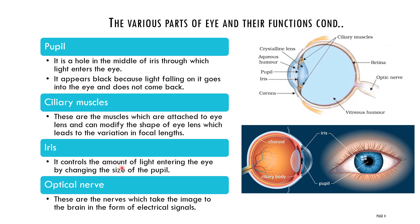Next is the iris. It controls the amount of light entering the eye by changing the size of the pupil. The main function of the iris is to control the amount of light entering the eye — it may allow more or less light.